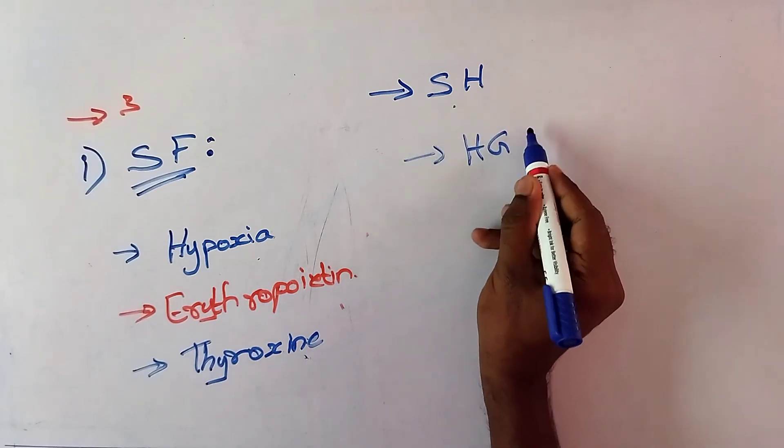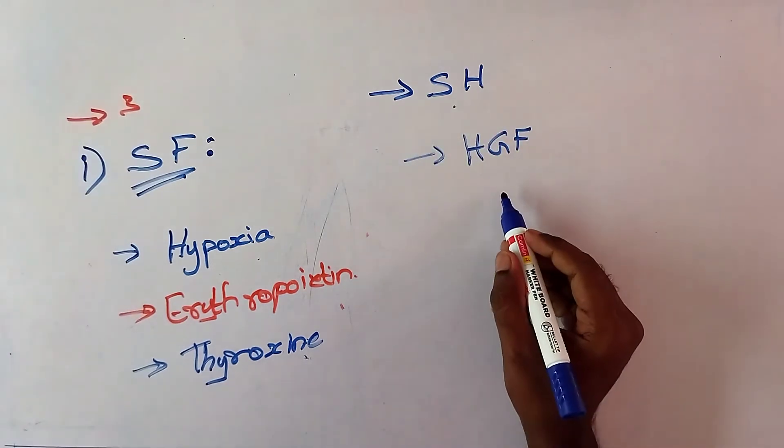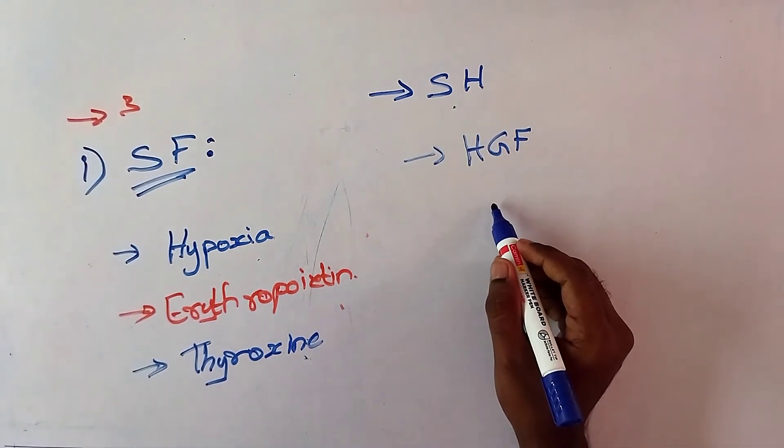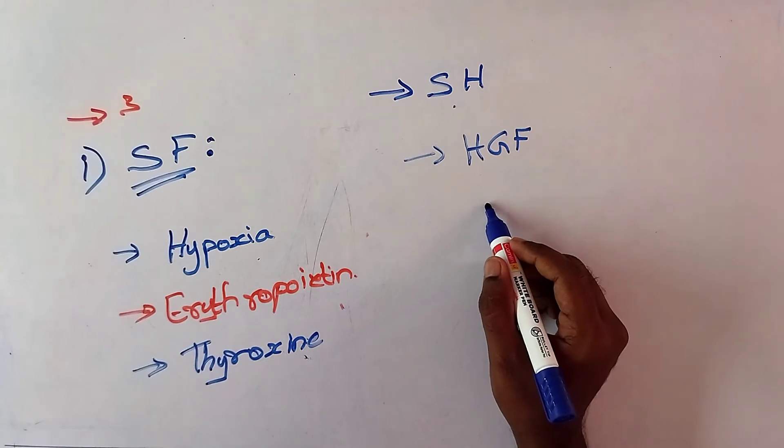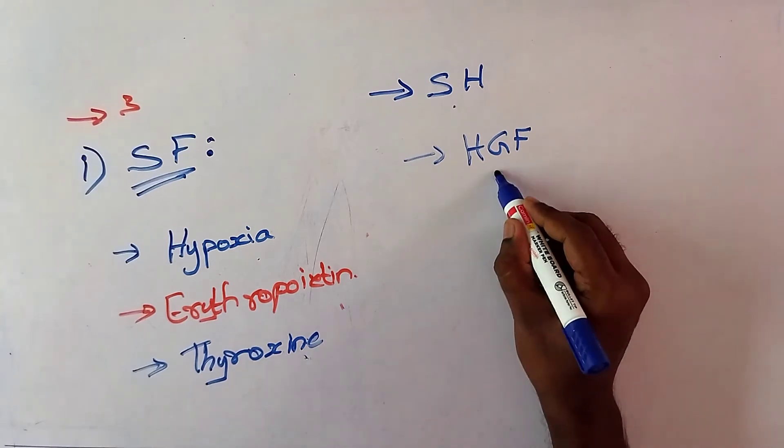The fifth stimulating factor is hemopoietic growth factors, also called growth inducers. These are interleukens and stem cells. Interleukens are glycoproteins which belong to the cytokine family.